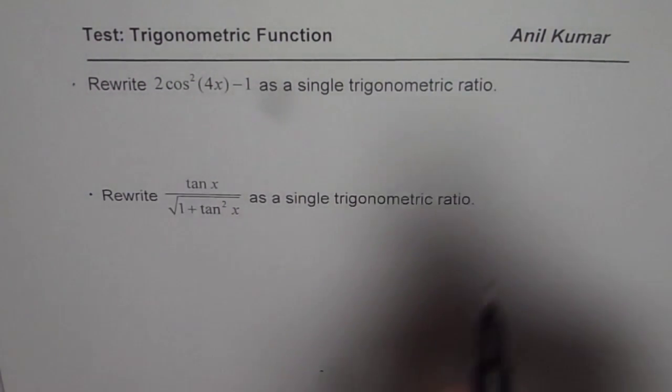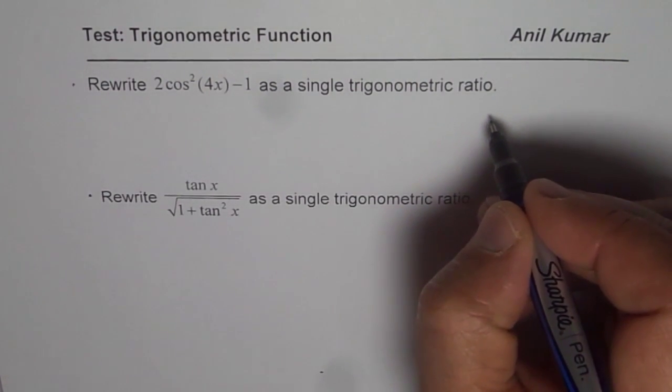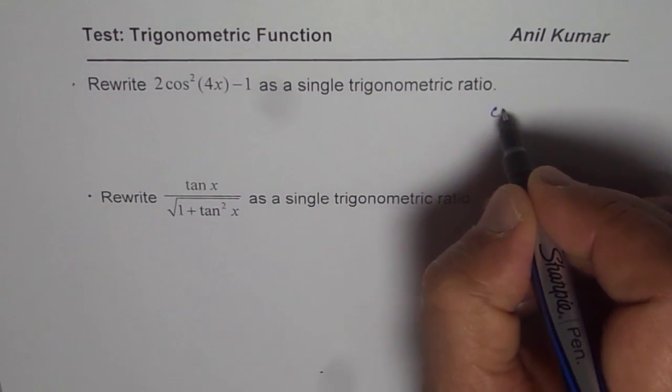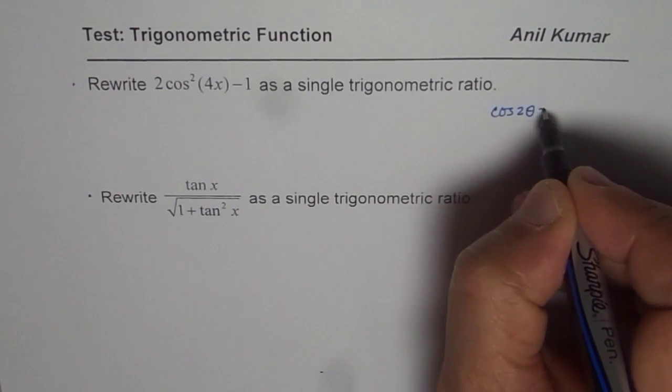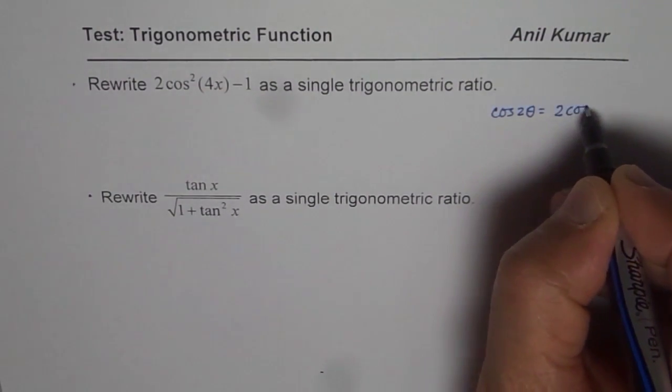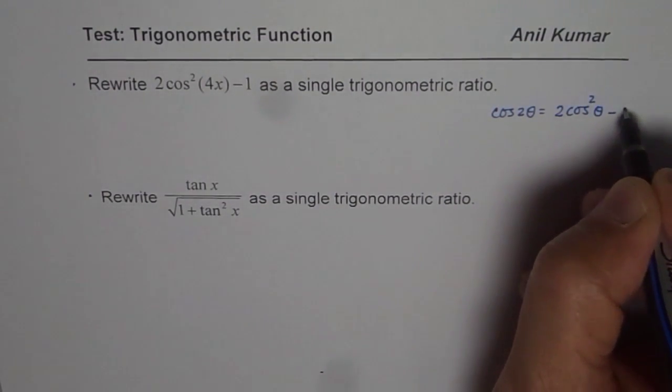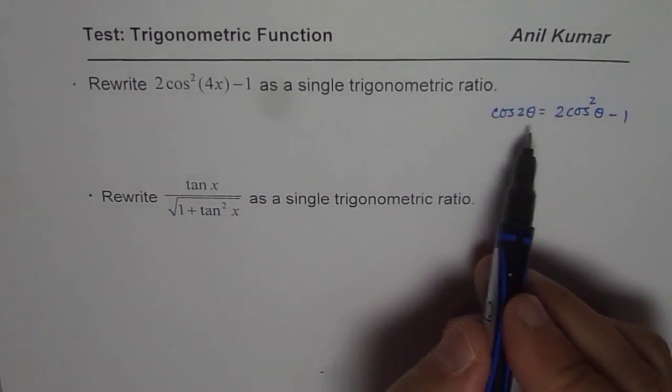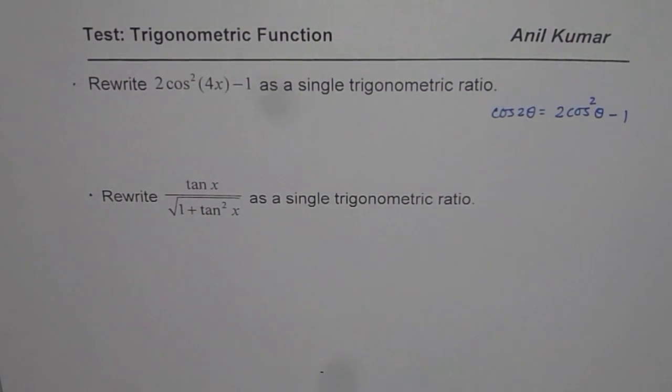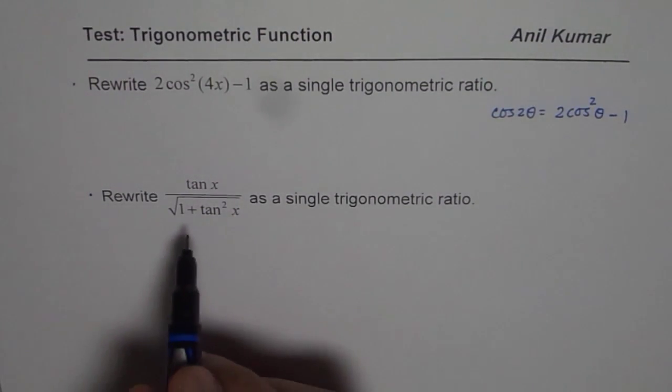Now for the first one, that reminds you of the double angle formula which is cos 2θ = 2cos²θ - 1. So you can apply this formula and solve the equation.